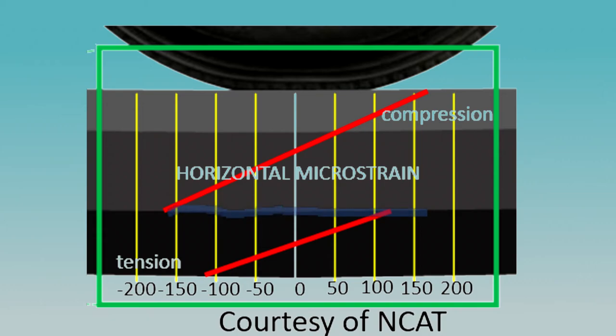In this instance, a 50% increase in strain occurs, and if the layer is unable to handle the strain, a bottom-up crack will begin at the area of debonding and propagate upwards, further diminishing the capacity of the roadway to perform as designed.